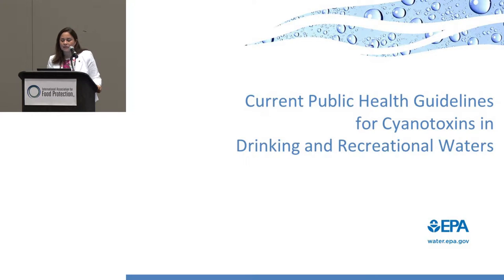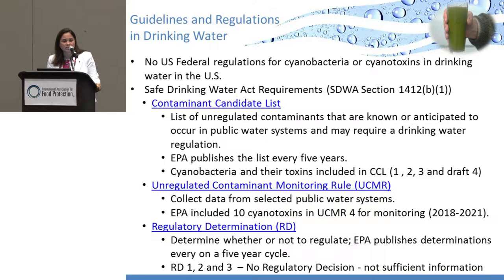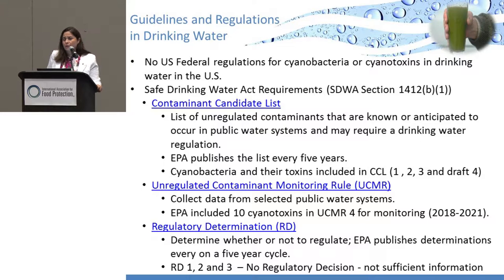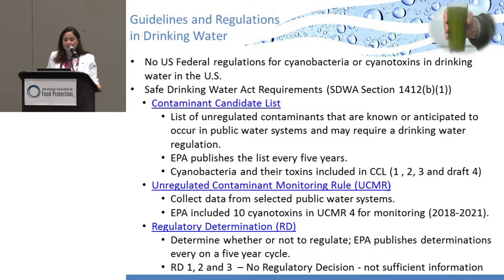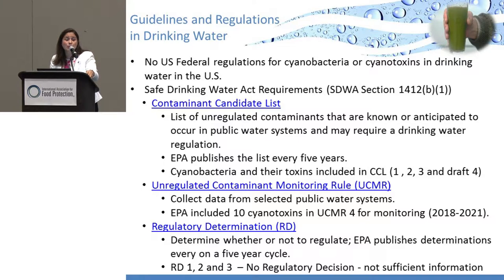Let's talk about current public guidelines for cyanotoxins in drinking water and recreational waters. We don't have a federal regulation for cyanobacteria and cyanotoxins. Regulations for drinking water are based on the Safe Drinking Water Act, which asks EPA to determine maximum contaminant levels. We have a program called the Contaminant Candidate List (CCL), published every five years, which includes contaminants that could be present in drinking water, could have adverse risk to human health, and for which we don't have regulation.